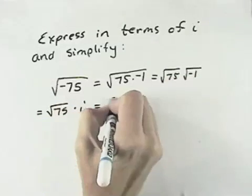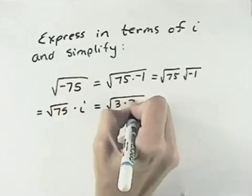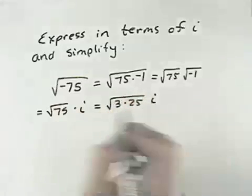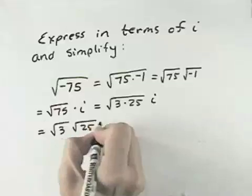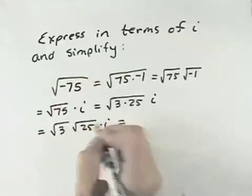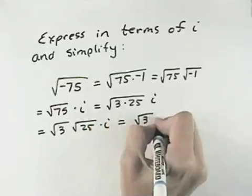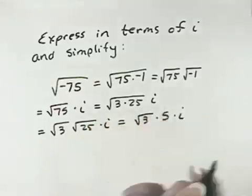And then 75 can be broken down. That's 3 times 25, and we still have our i. So that's the square root of 3 times the square root of 25 times i. But the square root of 25 is 5. So we have the square root of 3 times 5 times i.